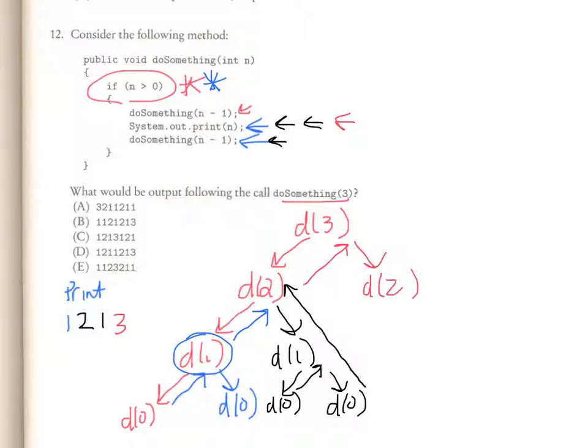So you'll notice, all of these method calls for do something 2 resulted in a 1, 2, 1. So if I were to continue this pattern on down here, I would print another 1, 2, 1. And that's why our correct answer for this problem is C.